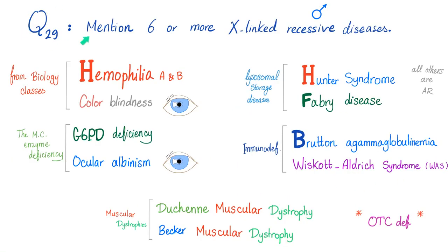Let me answer the question of the previous video: please mention six or more X-linked recessive diseases. First, if it's X-linked recessive, it's going to be more common in males than females. Let's organize ourselves. Hemophilia A and B, and colorblindness. If you ask any biology teacher what X-linked recessive diseases they know, they'll say hemophilia and colorblindness, and that's about it. But if you are a doctor, you need to learn all of this. So let's start with the most common enzyme deficiency in the world,